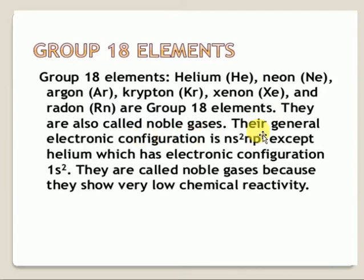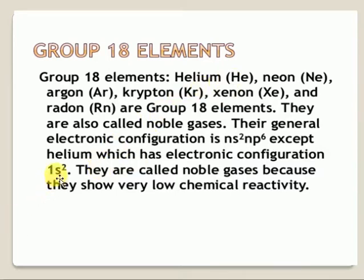They are called noble gases. The general electron configuration is ns² np⁶. Because of the complete valence shell electrons, these elements do not take part in chemical reactions. They are available in gaseous form — that's why they are called noble gases or inert gases. They show very less chemical reactivity.